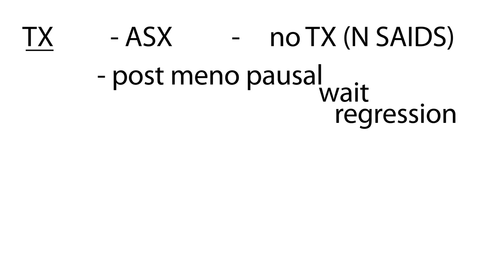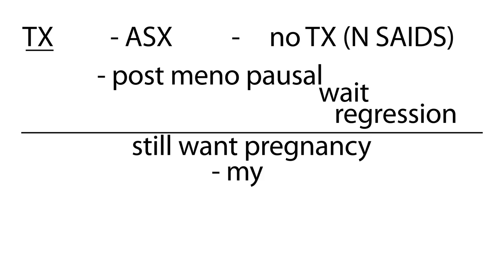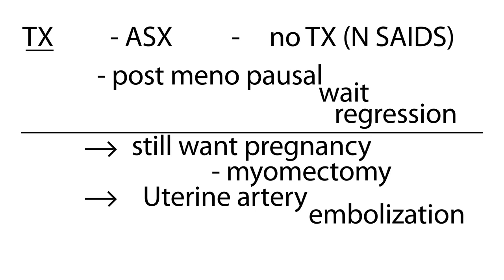For women who still want to have children and have fibroids, a myomectomy is performed — basically just removing the fibroids while leaving the uterus in place. However, it is not always possible if the fibroids are not surgically accessible. Another option is uterine artery embolization, which cuts off the blood supply to the fibroids, aiming to let them infarct and regress in size without interfering with pregnancy.